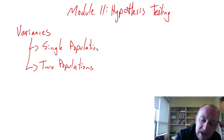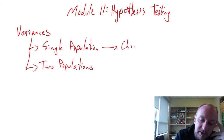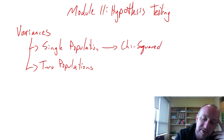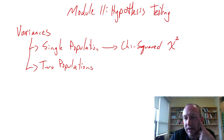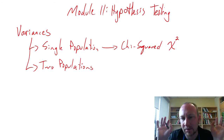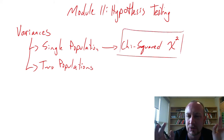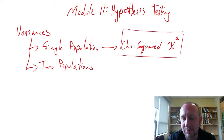For single population tests, we need a new distribution called the chi-squared distribution. The notation used is the Greek letter chi-squared. Many students call it the 'chi-squared distribution,' which is fine — as long as you understand it's properly called the chi-squared distribution.